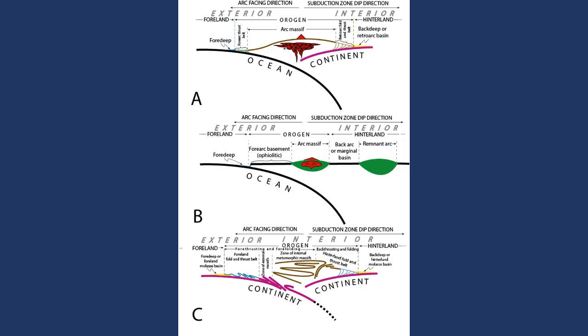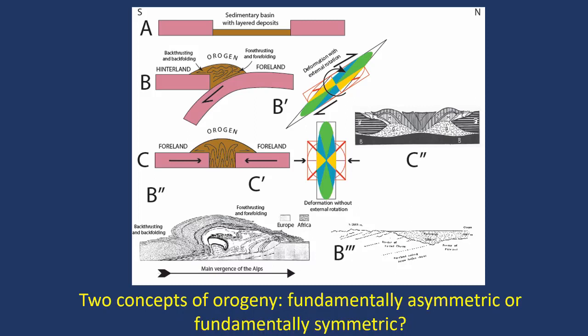There are three kinds, as you can see here. Here is what we call a shortening magmatic arc, like the Andes. This is an extensional magmatic arc, like Japan or the Marianas. And this is a continent-continent collision zone. The closest example we know is, of course, the Alps and the Apennines. Mountain belts form by closing an ocean, and this is how we now think they form — they're asymmetric. But there are still many who think symmetric shortening is the main mode, particularly after continental collision.